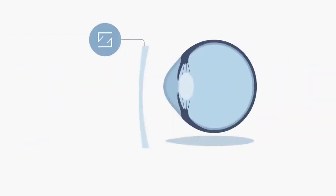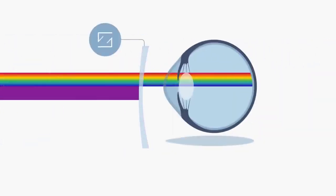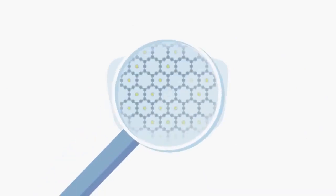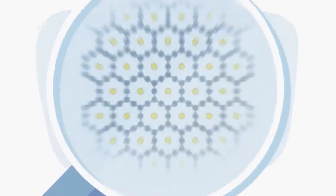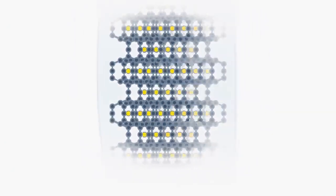But Zeiss has a solution to prevent that. So no UV radiation can reach the eye through the lens. The secret lies in the new Zeiss UV Protect technology, which is integrated into the lens material. Let's have a closer look at the basics of how it works.